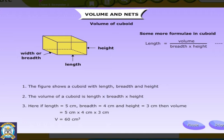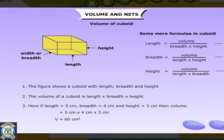If volume of a cuboid is given and measure of two edges are given, we can find the third edge using formulae given above.